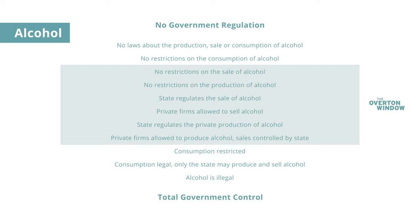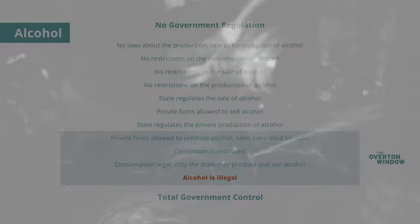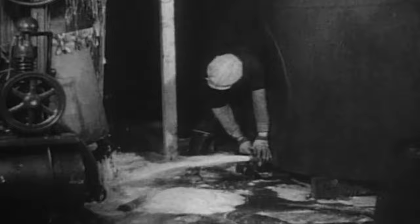The Overton window doesn't always move in just one direction. For public policy on alcohol, for example, the Overton window moved toward less freedom when prohibition was enacted. The consumption of alcohol was made illegal because the public was fed up with the social problems caused by very high alcohol consumption back in those days.